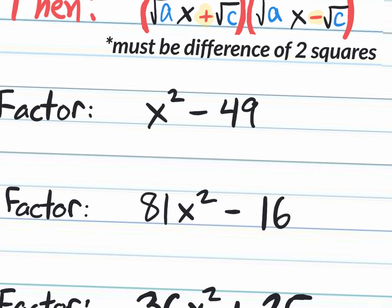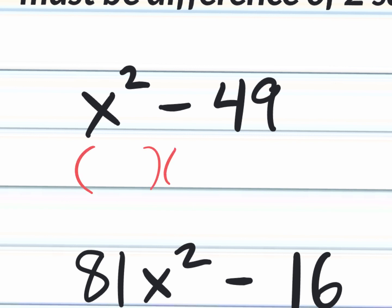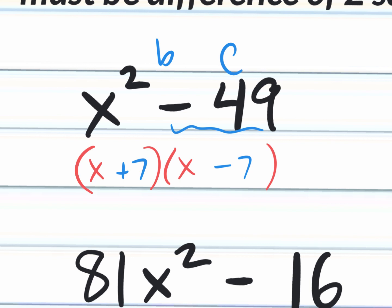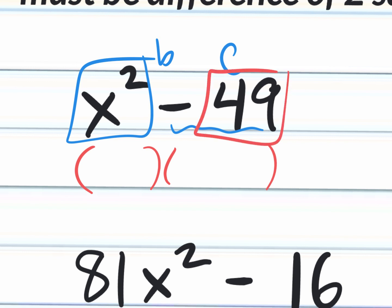Let's look at x squared minus 49. You could use the old school method: parentheses, x and x, what times what is negative 49 that adds together to give zero as the middle value? That's positive 7 and negative 7. Or, with the square root approach: square root of x squared is x; square root of 49 is 7. In order to get a negative 49 at the end, the signs must be different — one plus and one minus. It doesn't matter which one comes first, as long as they're different.